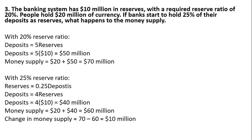This is basically a two-step problem. First, when the reserve ratio is 20%, deposits equals 5 times reserves. Deposits equal 5 times $10 million — the banking system has $10 million of reserves — so deposits are $50 million. Adding the $20 million of currency that people are holding, the money supply is $70 million.